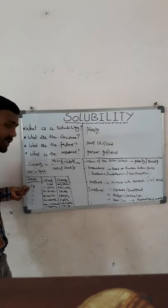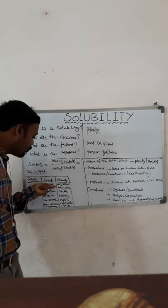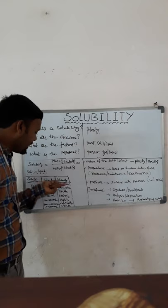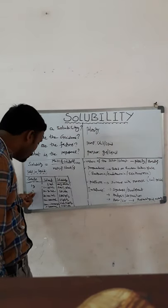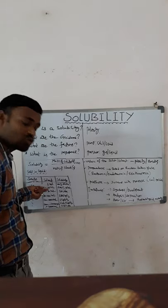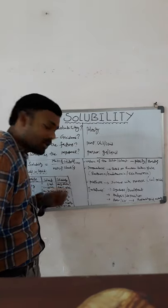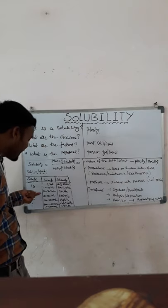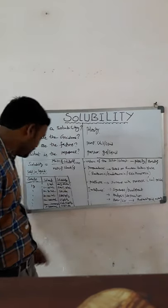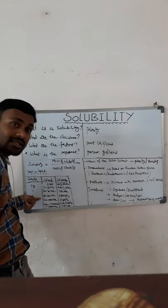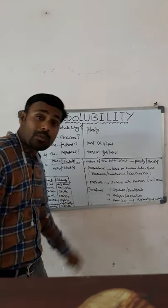The pharmacopoeias have given the following classifications: if 1 gram of solute requires less than 1 ml of solvent to dissolve, the substance is very soluble. If it requires 1 to 10 ml, it is freely soluble. If it requires 10 to 30 ml, it is soluble. If it requires 30 to 100 ml, it is sparingly soluble.